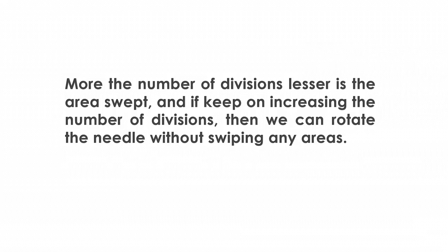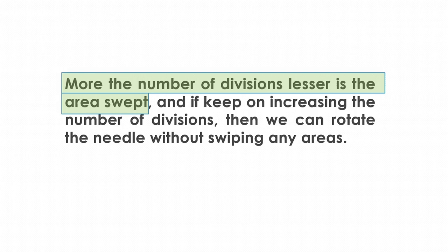So actually this sentence written here is misleading. Half of the sentence is correct: more divisions means lesser area swept, and if we keep increasing divisions, the area will keep decreasing. But this last line, 'then we can rotate the needle without swiping any area,' is wrong because even if we keep increasing divisions, the area will keep decreasing but it has a lower limit. It cannot swipe zero area.